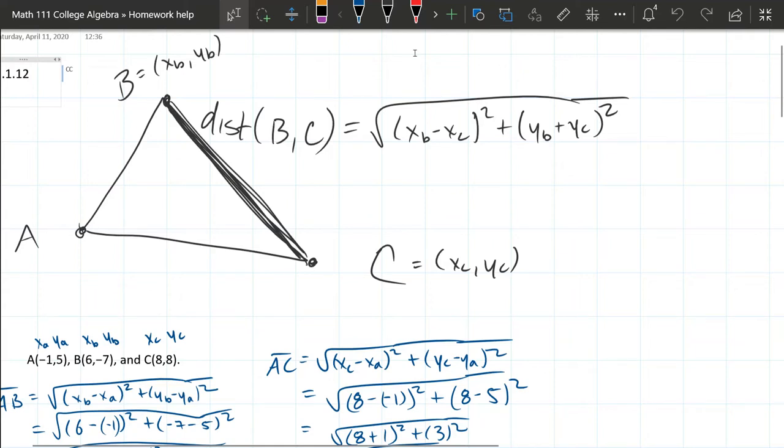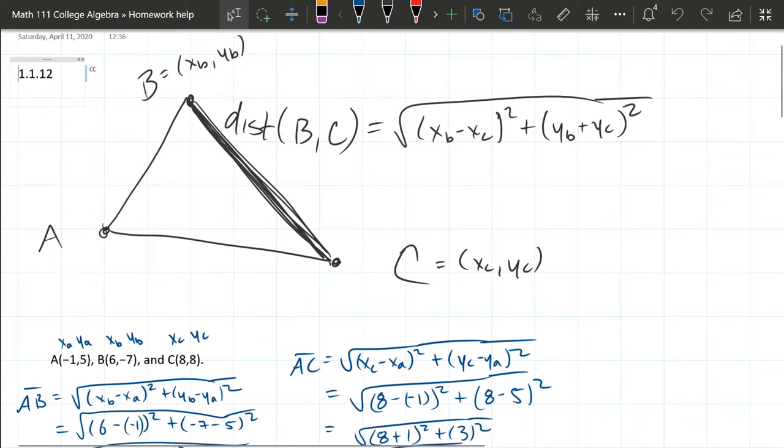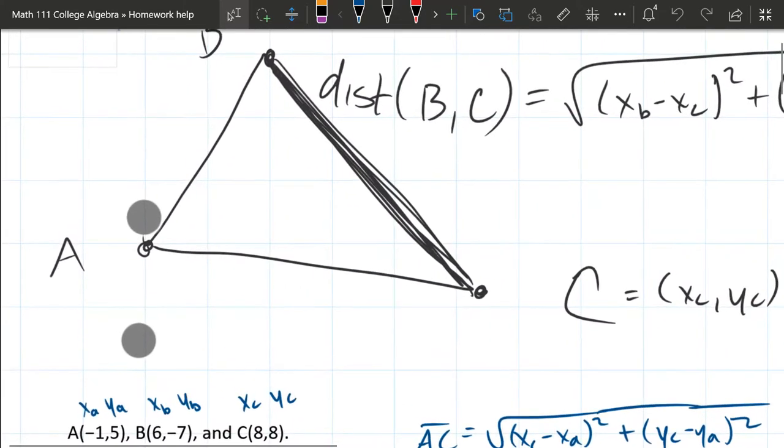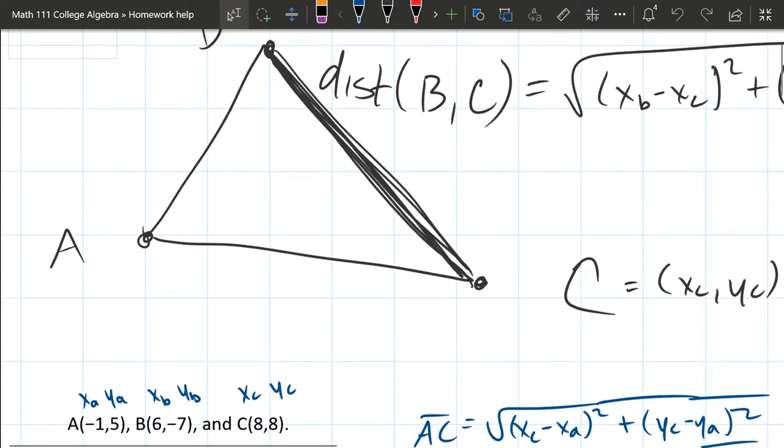So we have a perimeter of a triangle question, and this information is given to us as three points. So I have my points right here at the bottom of the screen: A(-1, 5), B(6, -7), and C(8, 8).